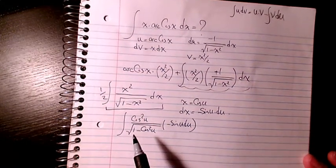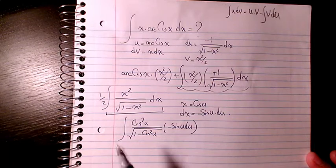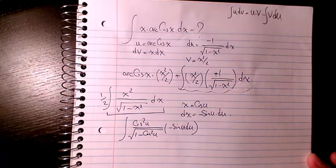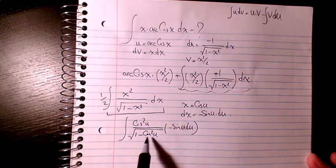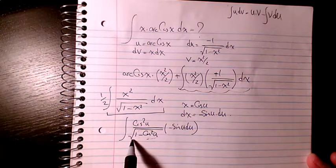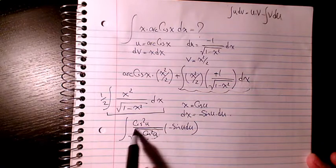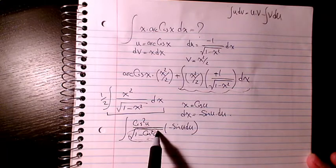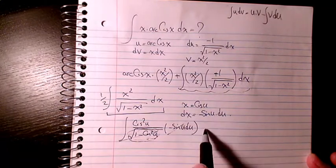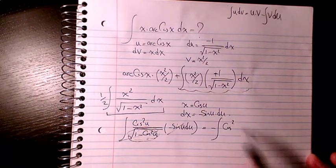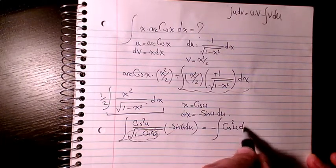From the trig identity, 1 minus cos²(u) equals sin²(u), because sin²(u) plus cos²(u) is always equal to 1. So the square root of (1 minus cos²(u)) reduces to sin(u). The sin(u) in the denominator and the negative sin(u) from dx cancel out, and we are left with negative integration of cos²(u) du.